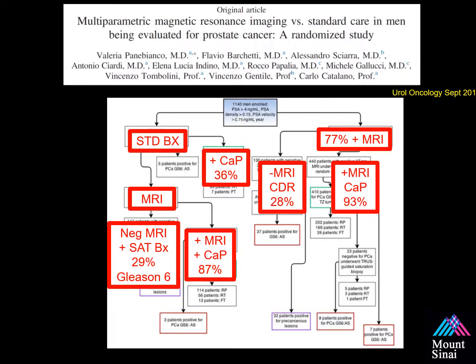Looking at the left side of the screen, patients underwent a standard biopsy. The cancer detection rate was 36%, which is typical of what we find in ultrasound-guided biopsy cohorts. In the group of men that had a negative 12-core biopsy, they then underwent multiparametric MRI. If their MRI was positive, the cancer detection rate was 87%. Patients with a negative MRI then underwent saturation biopsy, and the cancer detection rate was 29%, with the majority being Gleason-6 disease.